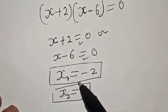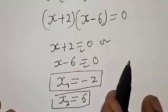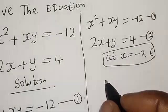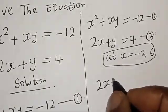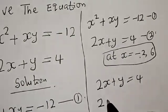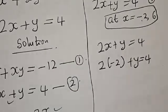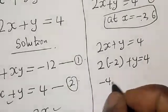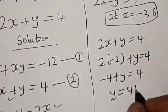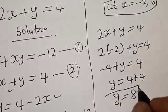Let's substitute for x in equation 2 to get the value of y. Our equation 2 is 2x plus y equals 4. At x equals minus 2, we have 2 times minus 2 plus y equals 4. Then minus 4 plus y equals 4, so y equals 4 plus 4, giving y equals 8. Let's call this y1 — our y1 is equal to 8.